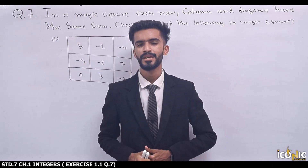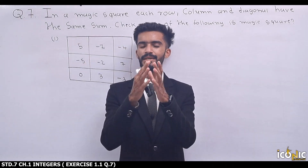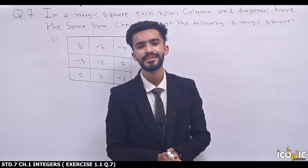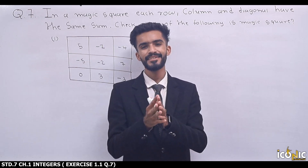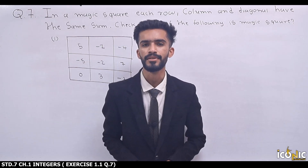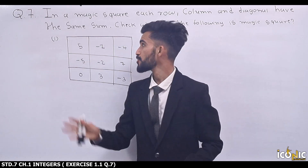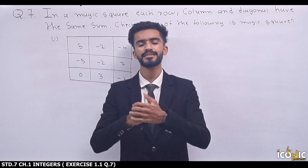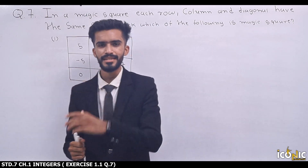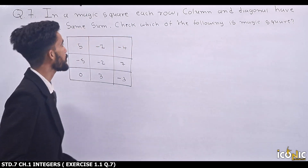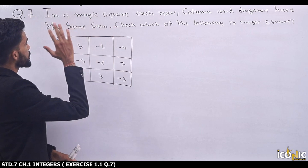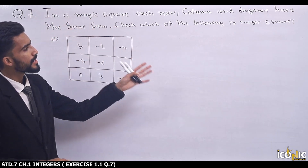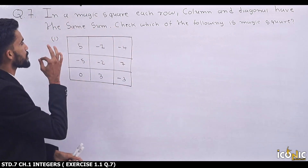Hello students, my name is Garvi Neithik and we are studying Chapter Number 1, that is Integers of Class 7. In this video we are studying Question Number 7 of Exercise 1.1. In question number 7, we have: in a magic square, each row, column and diagonal have the same sum.